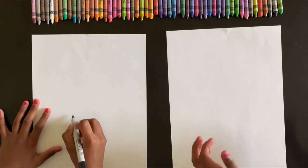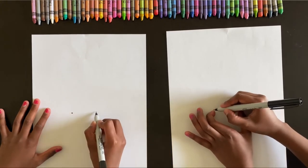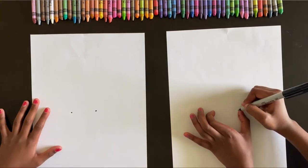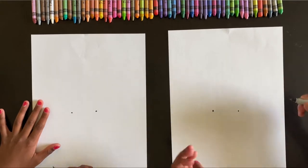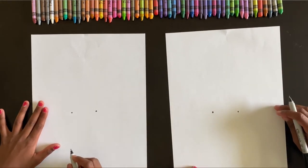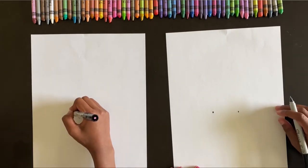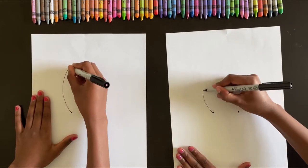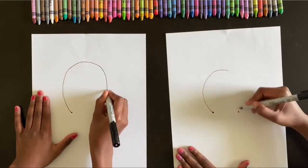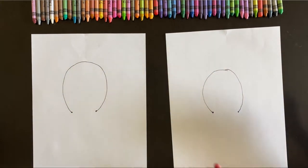First, draw two points like this. Here and here. Now from the point, we're going to draw a U like this. An upside down U. Around. And connect the dots together like this.